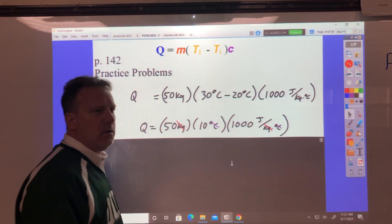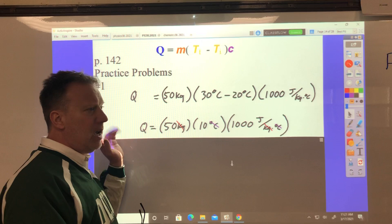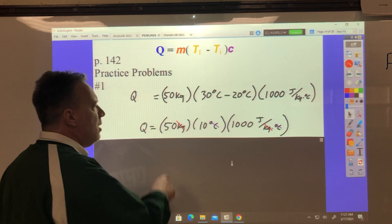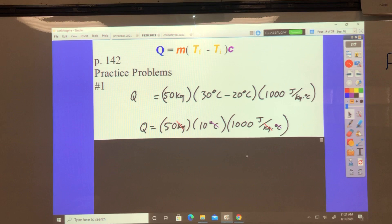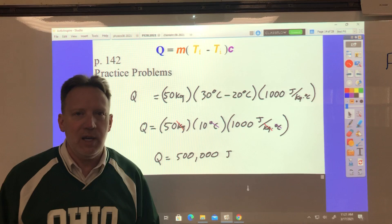And the only unit left is joules. And that is the unit for thermal energy change. Remember, thermal energy change and heat are the same thing for our purposes. So 50 times 10 times 1,000 should be 500,000 joules.